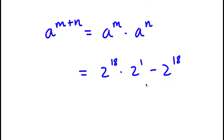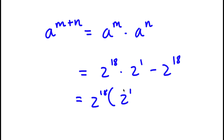From here, I can simply factor out 2 to the power of 18. So now I have 2 to the power of 18 times — 2 to the power of 18 divided by 2 to the power of 18 is simply 2 to the power of 1. And negative 2 to the power of 18 divided by 2 to the power of 18 is simply negative 1.